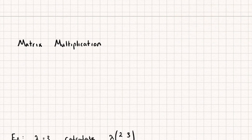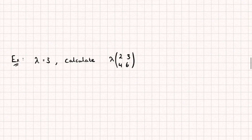Let's start off by looking at how we can multiply a matrix by a scalar, and this actually works very similarly to how we would multiply a vector by a scalar. So here we have lambda equal to 3 — we usually use the letter lambda to represent a scalar — and we are asked to calculate lambda multiplied by this matrix. So this just means 3 multiplied by the matrix 2, 3, 4, 6.